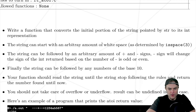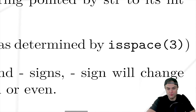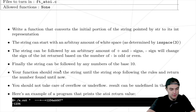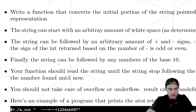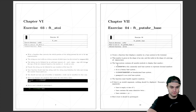The string can start with an arbitrary amount of white space as determined by the `isspace` function — we check `man 3` for library functions. The string can be followed by an arbitrary amount of plus and minus signs. The minus signs change the sign of the returned int based on their count: an odd number of minuses gives a negative result, an even number cancels out, as in mathematics. Finally, the string can be followed by any number of base-10 digits.